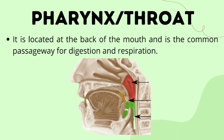The next stop of our food is the pharynx, or the throat. When the bolus is swallowed, it passes through the pharynx. It is located at the back of the mouth and is the common passageway for both digestion and respiration. Since air and food share the same passage, it is important not to talk while eating — don't talk when your mouth is full — because there is a possibility of choking.